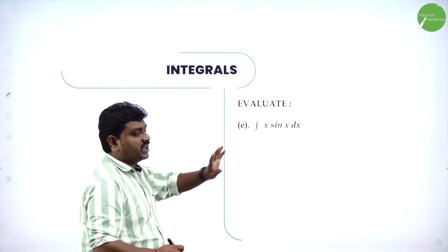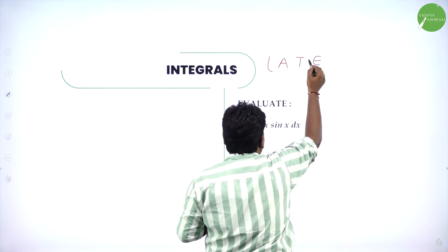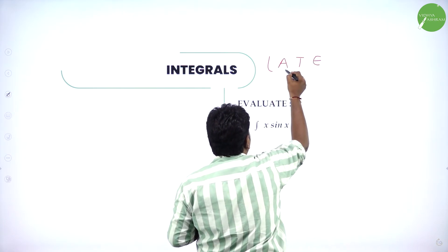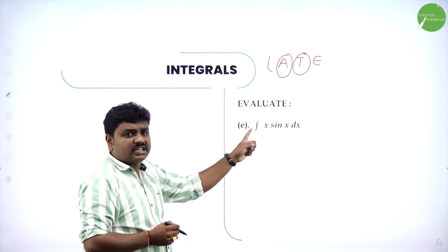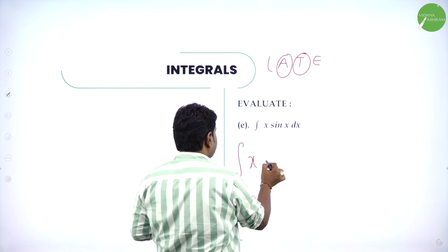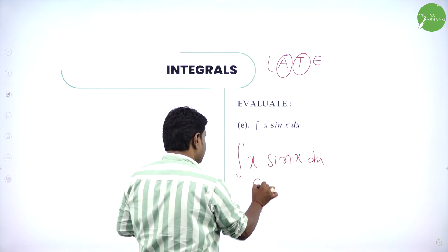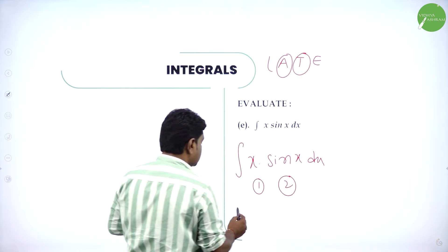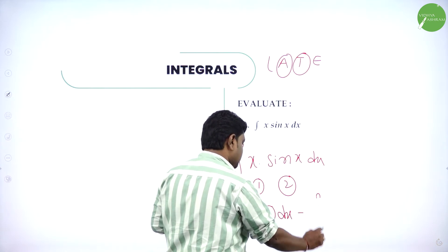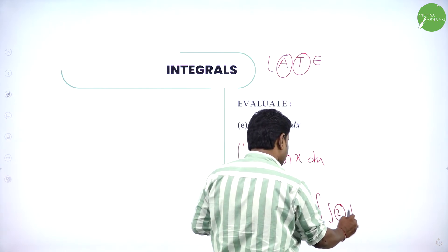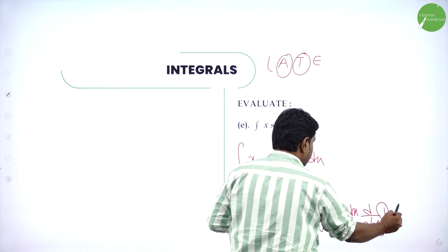Next: integration of x·sin(x) dx. LATE — algebra first, trigonometry next — it is in the correct order. So integration of x·sin(x) dx: first function is x, second function is sin(x). Apply parts: first into integral of second with respect to x, minus integral of integral of second with respect to x into derivative of first.